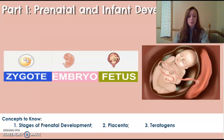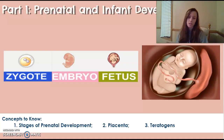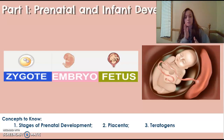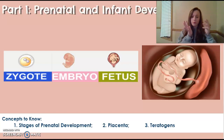Next is prenatal development and its three stages. The first stage is the zygote, occurring within the first two weeks — this is rapid cell division. After two weeks, the zygote becomes an embryo, which is the second stage, lasting from two weeks to about two months. This is the stage where organs begin to develop and the heart starts to beat. The fetus is the final stage, from nine weeks all the way to birth.